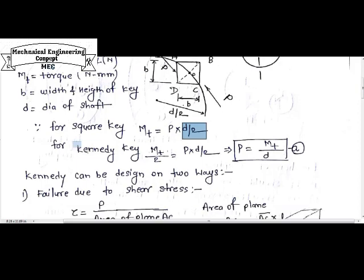Because here in Kennedy Key, we basically use two square keys in a shaft, so the load will be distributed in each of the keys. So we need to divide the torque value by 2. So the final load with respect to torque relation will come out as P is equal to MT divided by D. Small d is the diameter of the shaft, MT is the torque transmitted, P is the load on the shaft.